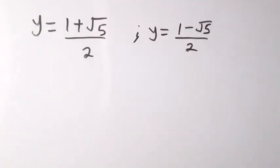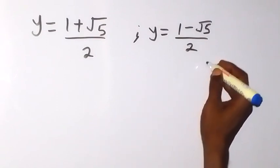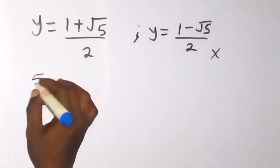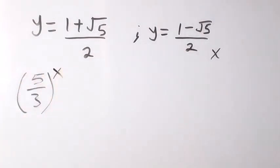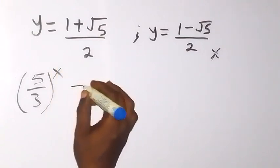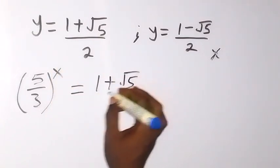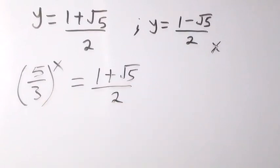When we separate the two solutions, the one with minus will not satisfy what we have, because our y is (5 over 3) raised to power x and this has to be positive. So that one will not work. That means our y will now be equal to (1 plus root 5) over 2. So these are y now, meaning (5 over 3) raised to power x equals (1 plus root 5) over 2.